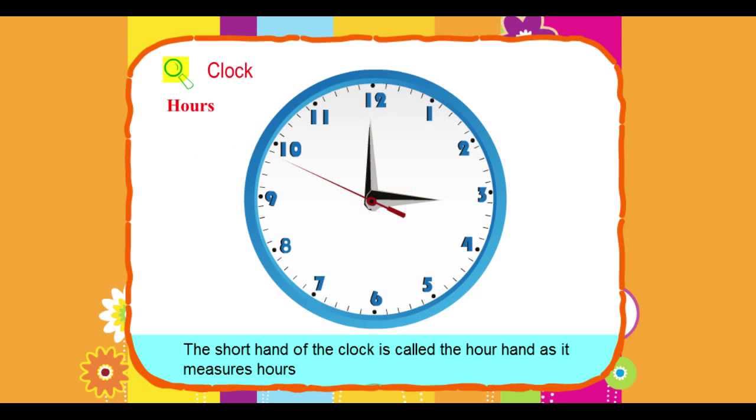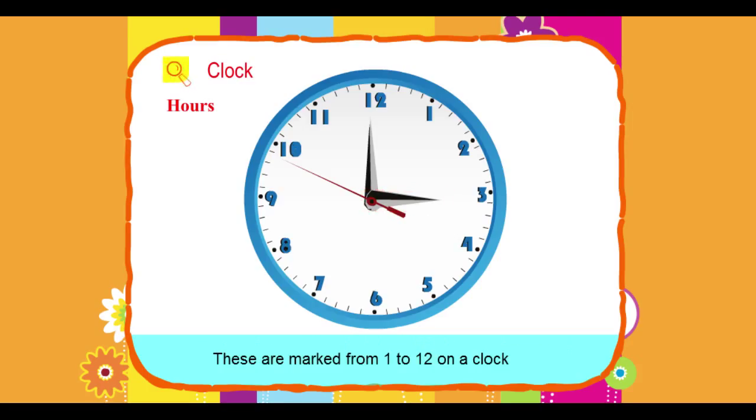Hours. The short hand of the clock is called the hour hand as it measures hours. These are marked from 1 to 12 on a clock.